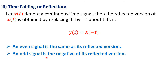Similarly, an odd signal is the negative of its reflected version, because a signal is said to be odd if x(t) = −x(−t). Therefore, an odd signal is the negative of its reflected version.